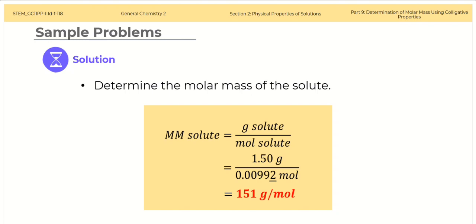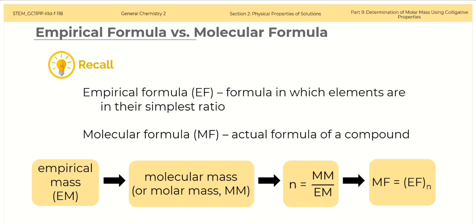This is the molar mass of the unknown solute. Recall the concept of empirical formula and molecular formula. Empirical formula is the formula in which elements are in their simplest ratio, while molecular formula is the actual formula of a compound. To determine the molecular formula: 1) Find the empirical mass from the given empirical formula; 2) Calculate the molar mass from the colligative property data; 3) Get the multiplier N by dividing the molar mass by the empirical mass; 4) Finally, use N as the multiplier of the empirical formula to get the molecular formula.